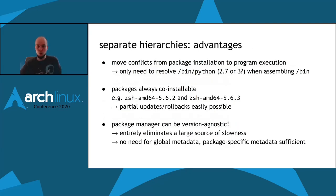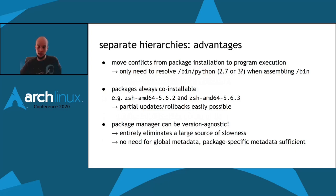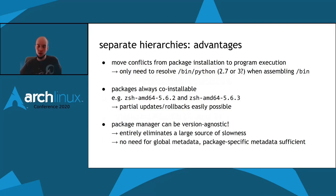Separate hierarchies move conflicts from package installation time to program execution time, which is a good place for users to disambiguate. You only need to resolve whether /bin/python should point to Python 2.7 or Python 3 when assembling /bin, not when installing programs. Many distributions make Python 2.7 and 3 co-installable because it's such a lengthy transition, but in DISTRI all packages are always co-installable. You could install zsh 5.6.2 and 5.6.3 on the same system at the same time, which means partial updates and partial rollbacks are easily possible.